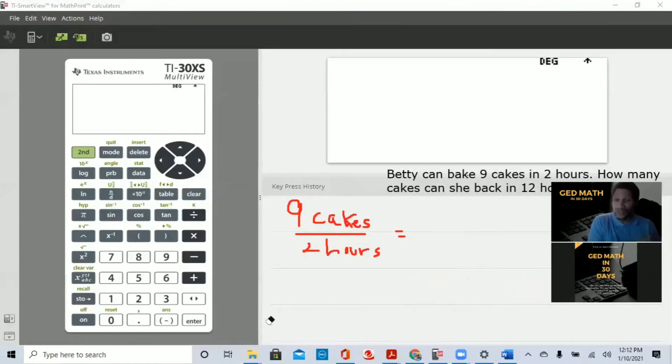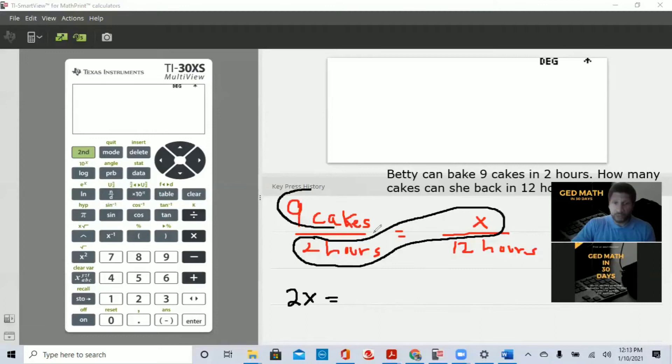Cross-multiplication. Again, we're going to start with the ratio we know. Nine cakes to every two hours. And we're going to set up the other ratio on the other side. We know 12 hours. We don't know how many cakes. That's the unknown. So we're going to use the variable x. And you cross-multiply. So we're going to cross-multiply. So first we're going to cross-multiply the one that has the x. So we're going to do this one first. So 2x, because 2 times x is 2x, equal. And then we're going to do the other side. We're going to cross-multiply. So if you notice, it forms an x. That's why it's called cross-multiply. So 9 times 12.